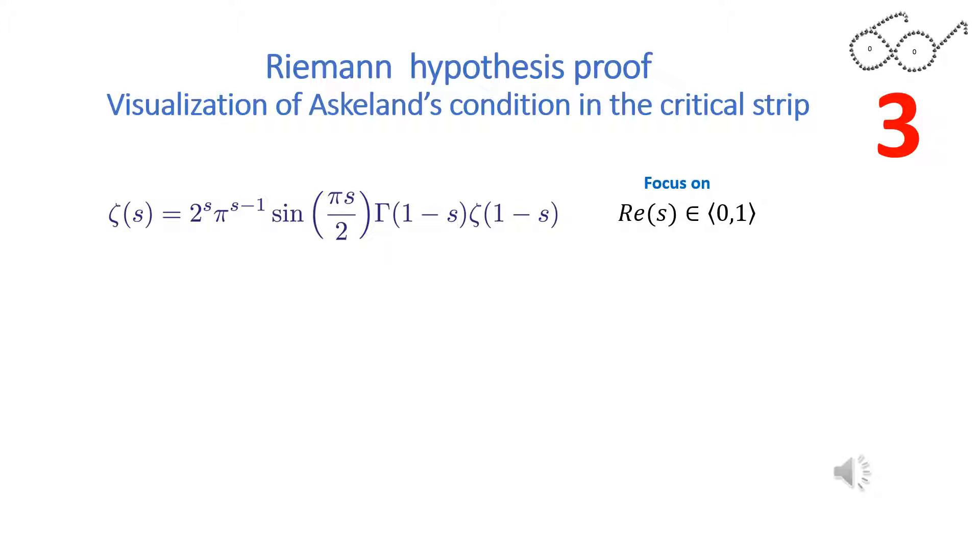This is Riemann's functional equation. We are in the complex plane where the real part of s is between 0 and 1. In this area, only zeta s and zeta 1 minus s can be 0. You saw two of these zeros in the visualization as two yellow dots.